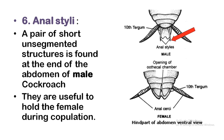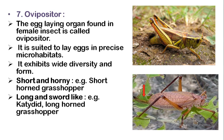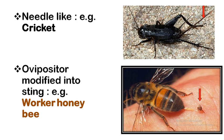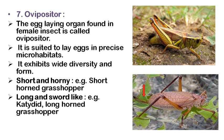Anal styles are generally found in males of cockroach and are useful for holding the female during copulation. Next is the ovipositor — the egg-laying organ in females. There is wide diversity in ovipositors: it is short and horny in grasshoppers, long and sword-like in katydids and longhorn grasshoppers.